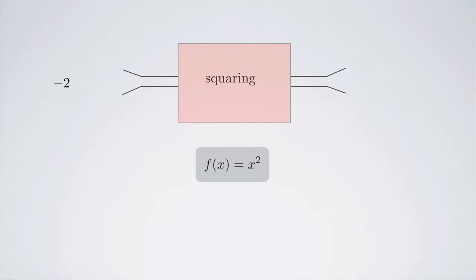If we were to put in negative 2, we would also get 4. So 2 and negative 2 both give 4 as an output, and that's totally okay for a function.